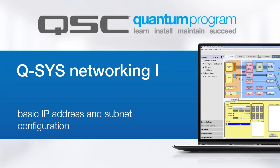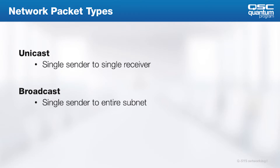Welcome back. Now that we've seen a little about how Q-SYS devices are configured, let's take a step back and think about the different types of network traffic, specifically thinking about multicast traffic. Before multicast, there's unicast, where a device is sending a packet point-to-point to another device on the network, and there's only one destination.